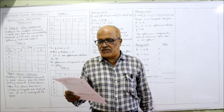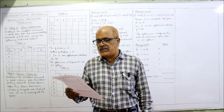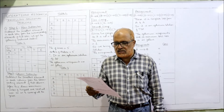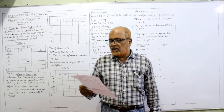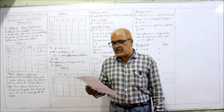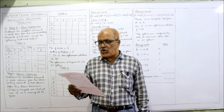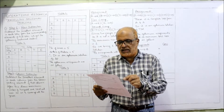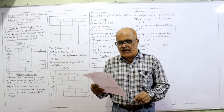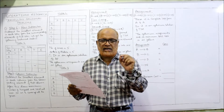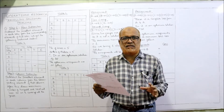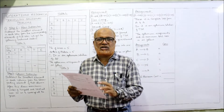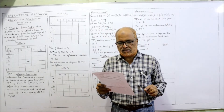A salesman has to visit five cities A, B, C, D, and E. He wishes to start from a particular city, visit each city only once, and then return to the starting city. The cost of traveling from one city to another is given. Determine the least cost route. Cells A to A, B to B, C to C, D to D, and E to E are given as zero — we put a dash because there is no cost involved in traveling from a city to itself.